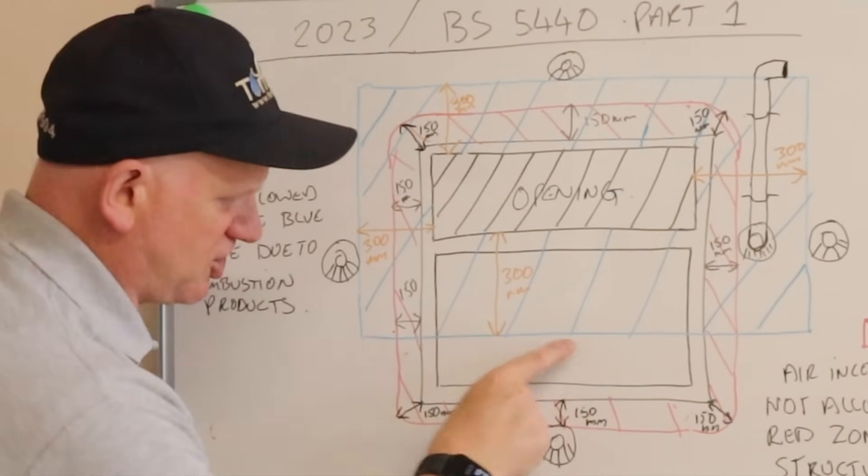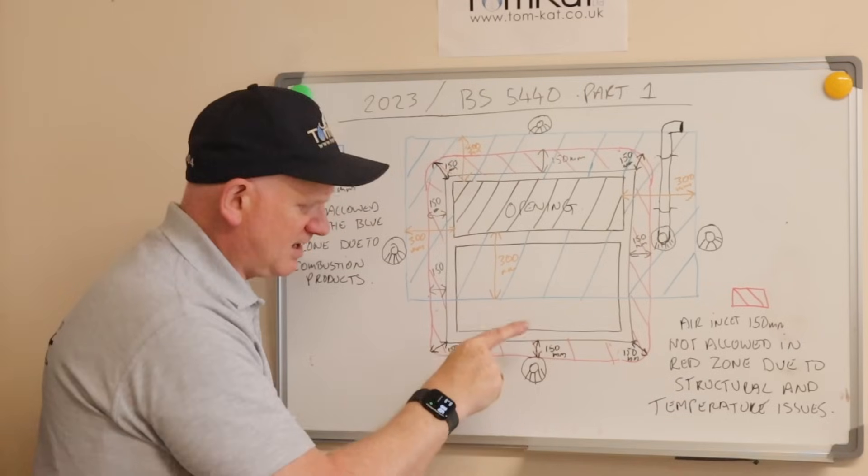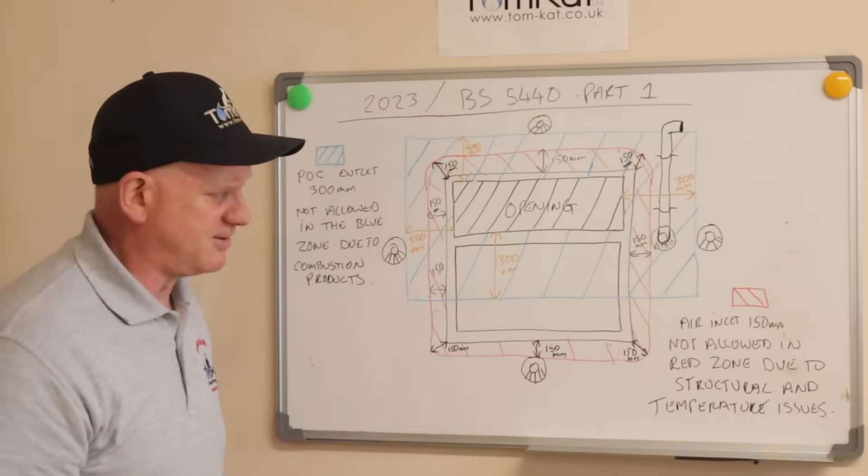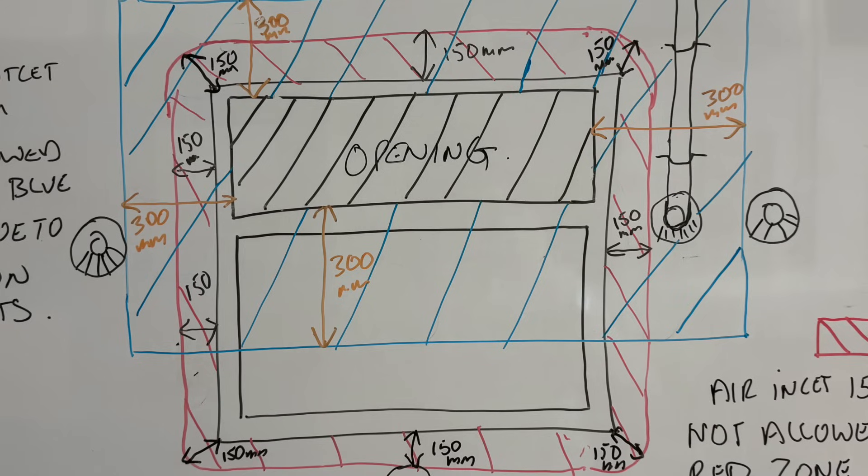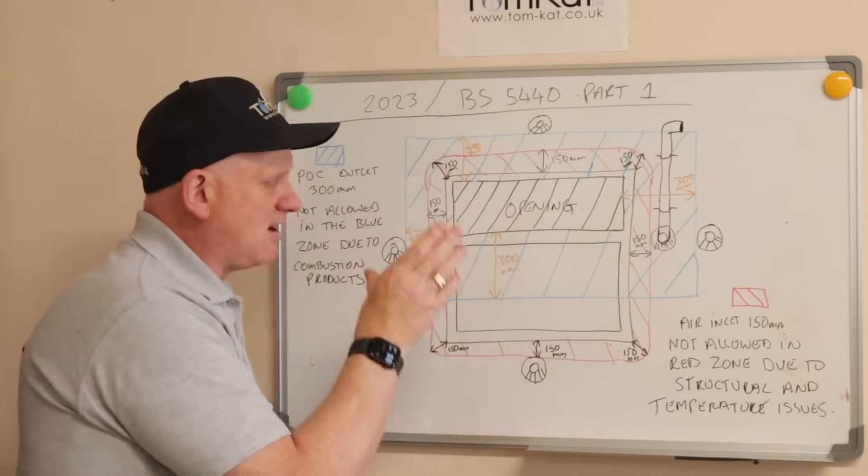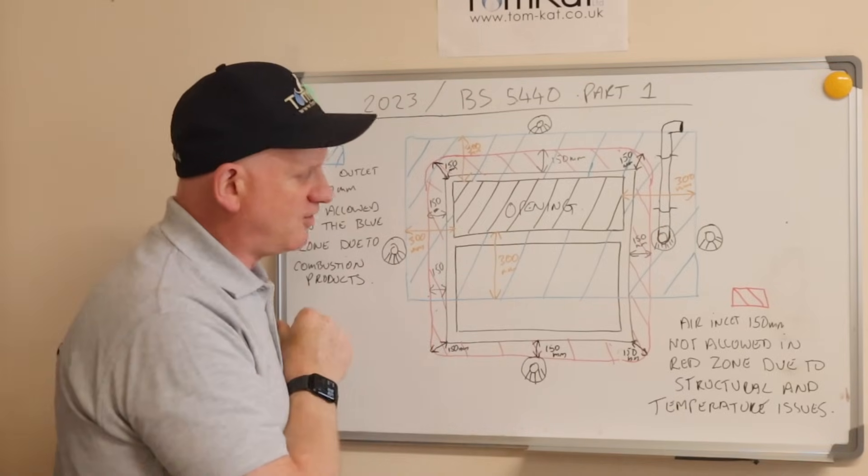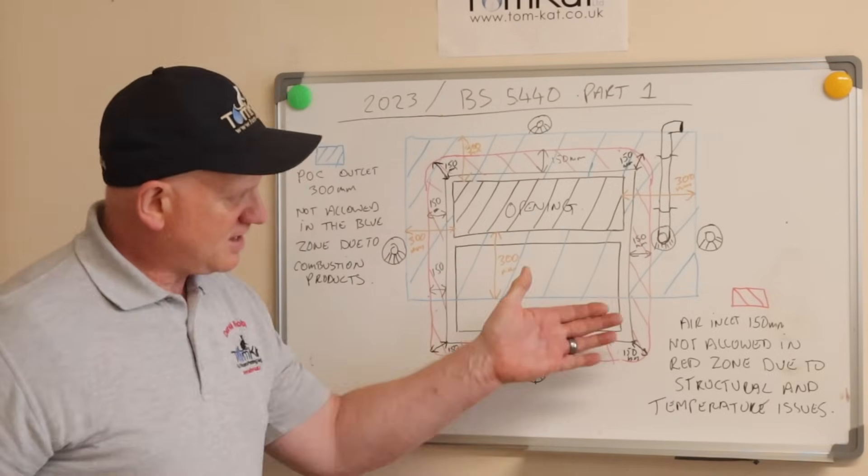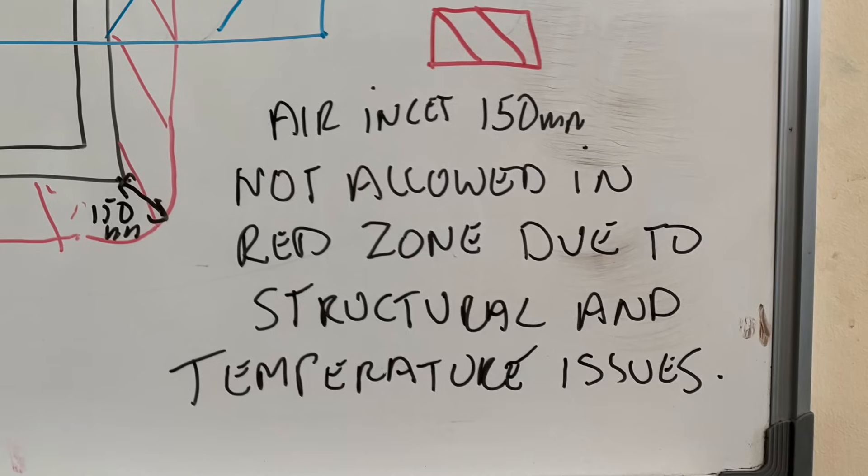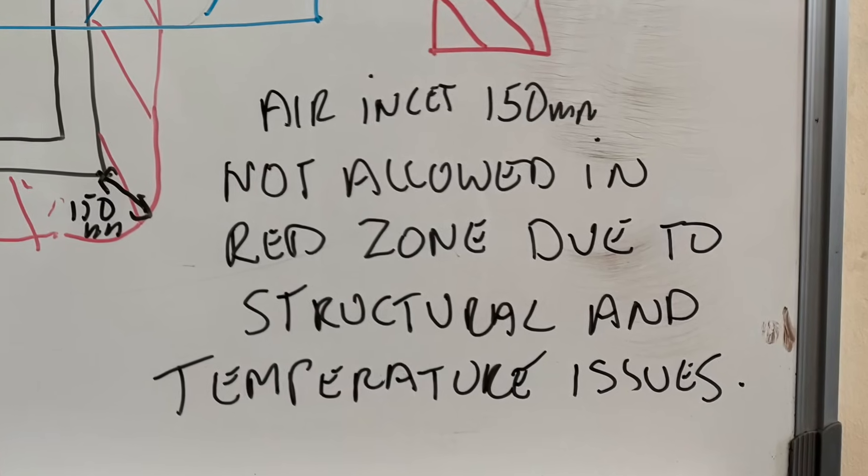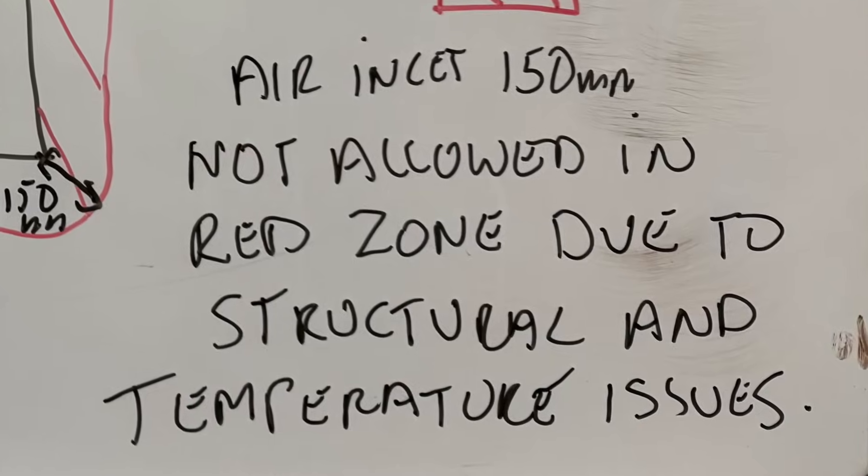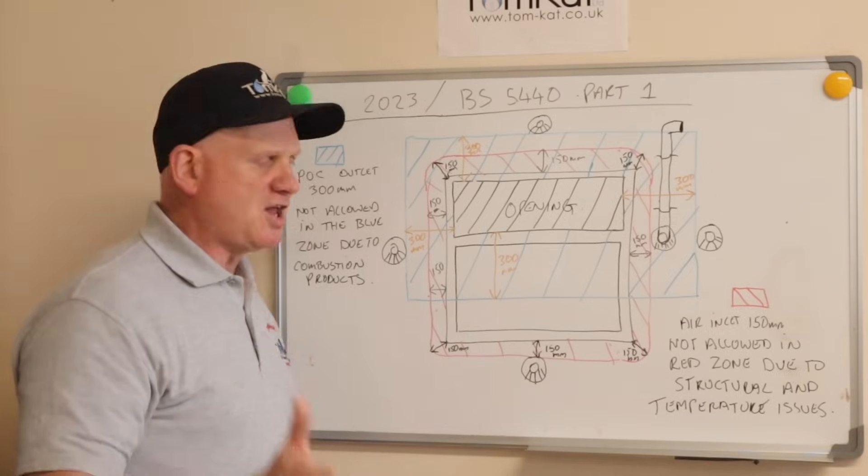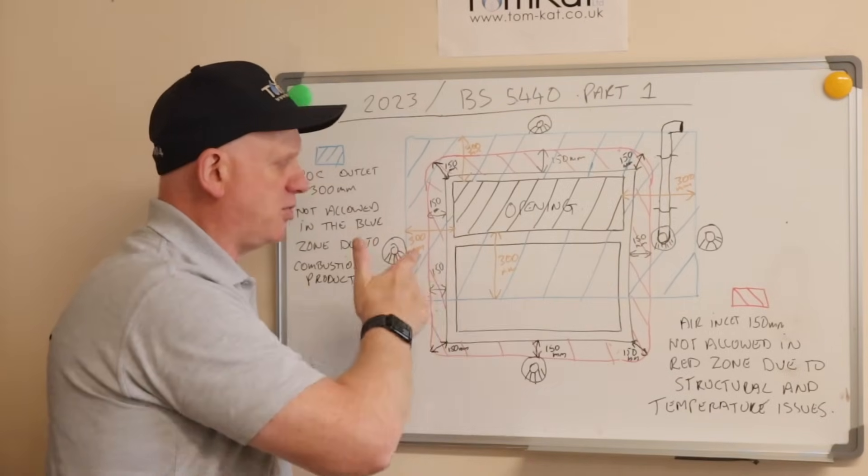So technically you can install the flue anywhere outside the shaded blue zone. Obviously you wouldn't be installing it here, but it means you could install it below the window. Now the red section you can see here is 150mm away from the frame.